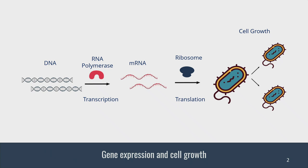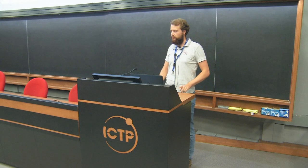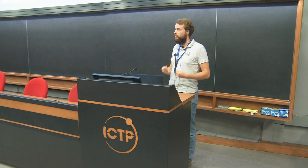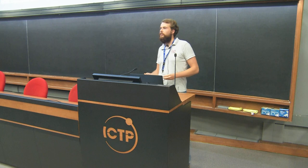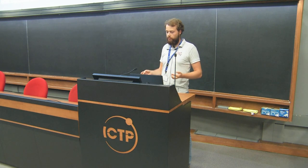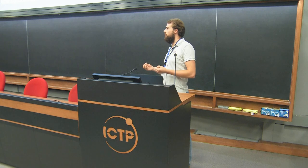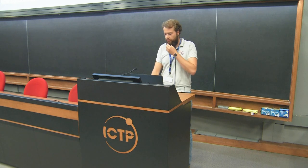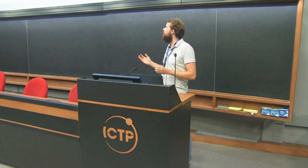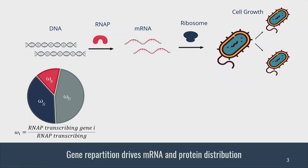I'm studying the transcription and translation fluxes to study the production of proteins. I want to get those fluxes to understand cell growth. Since I'm not really looking at enzymes and metabolic pathways, I'm looking at the distribution of the RNA polymerase over the different genes of interest.